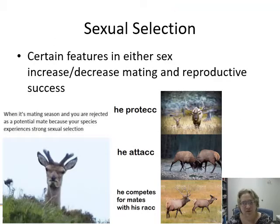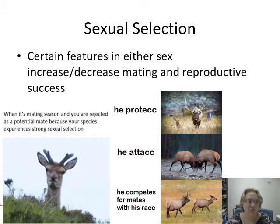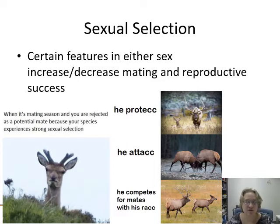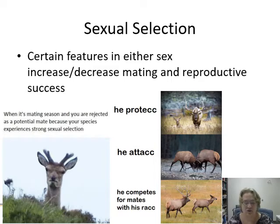Sexual selection is a form of natural selection where certain features in either sex increase or decrease mating and reproductive success, improving fitness. There might be a trade-off: you might have ridiculously large antlers or a massive tail, but as long as it's not super inhibiting your survival and you can still reproduce, it's an advantage.